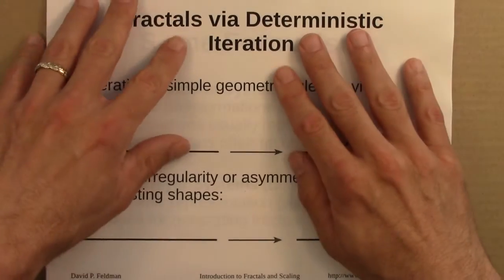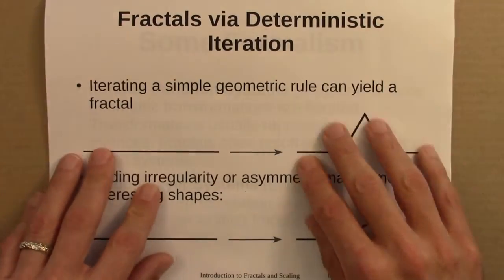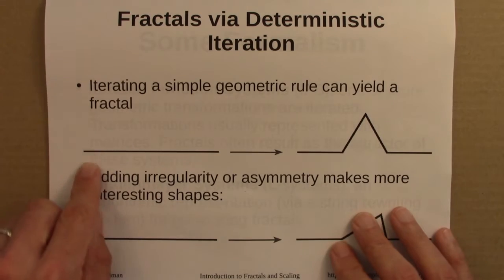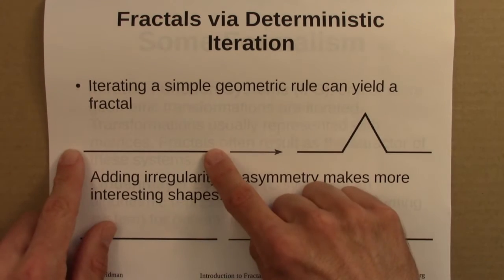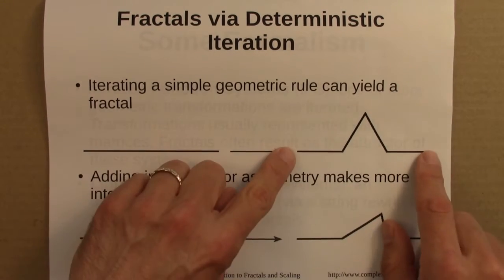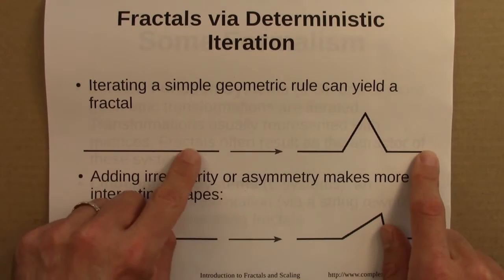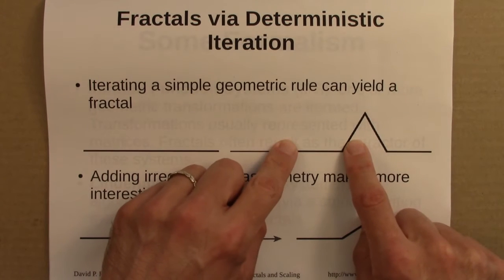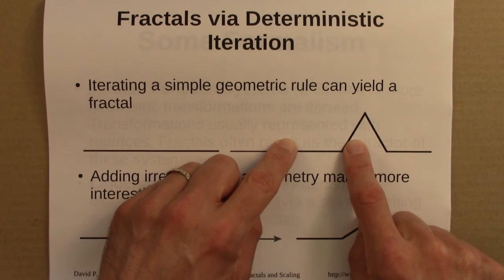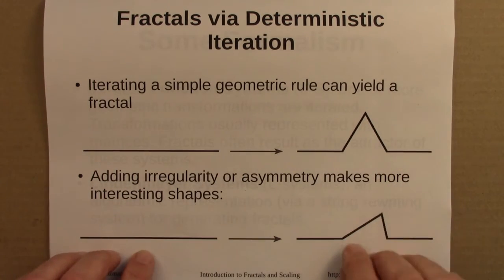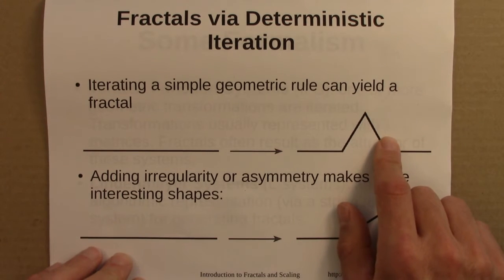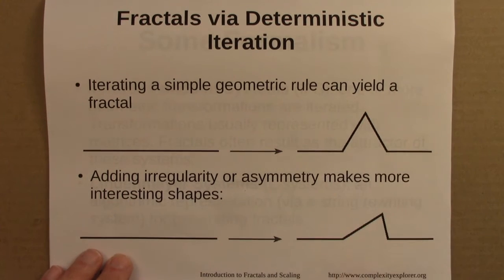We started by thinking about simple geometric rules: take a line segment, replace it with a bent line segment, and then repeat — iterate. Take those line segments, replace them with bent line segments. As we saw in the first unit, this is capable of producing fractals.